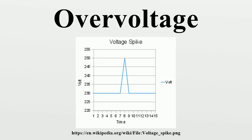When the voltage in a circuit or part of it is raised above its upper design limit, this is known as overvoltage. The conditions may be hazardous. Depending on its duration, the overvoltage event can be transient, a voltage spike, or permanent, leading to a power surge.